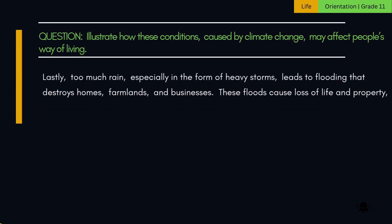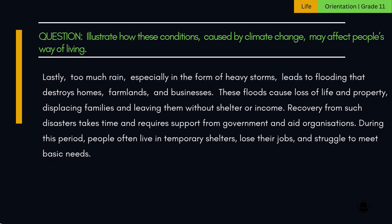Lastly, too much rain, especially in the form of heavy storms, leads to flooding that destroys homes, farmlands, and businesses. These floods cause loss of life and property, displacing families and leaving them without shelter or income. Recovery from such disasters takes time and requires support from government and aid organizations. During this period, people often live in temporary shelters, lose their jobs, and struggle to meet basic needs.